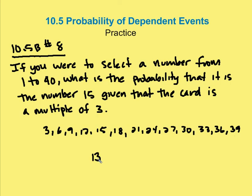Now, out of those 13 different multiples of 3, only 1 is a 15. So our answer is going to be 1 over 13. And that's it. There are no other formulas. You have to figure this one out on your own.